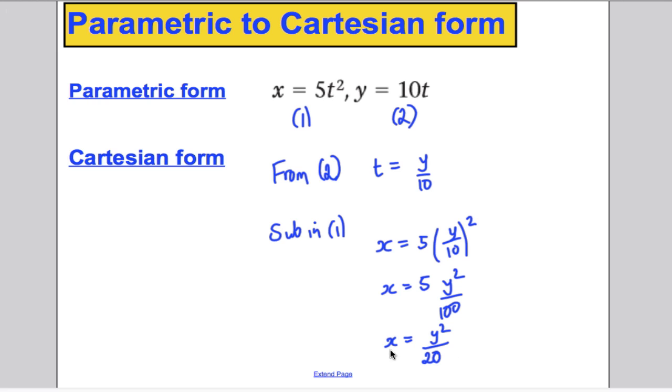And then rearranging, maybe making y squared the subject, y squared would equal 20x. And that's it, you'd be done. You could take square roots to make y the subject on its own, but it's fine to leave it like that. That would be a decent Cartesian form. So, to convert from parametric to Cartesian, you eliminate t's. Usually, a nice easy way of doing that is to make t the subject of one of the formulae and then substitute into the other one.